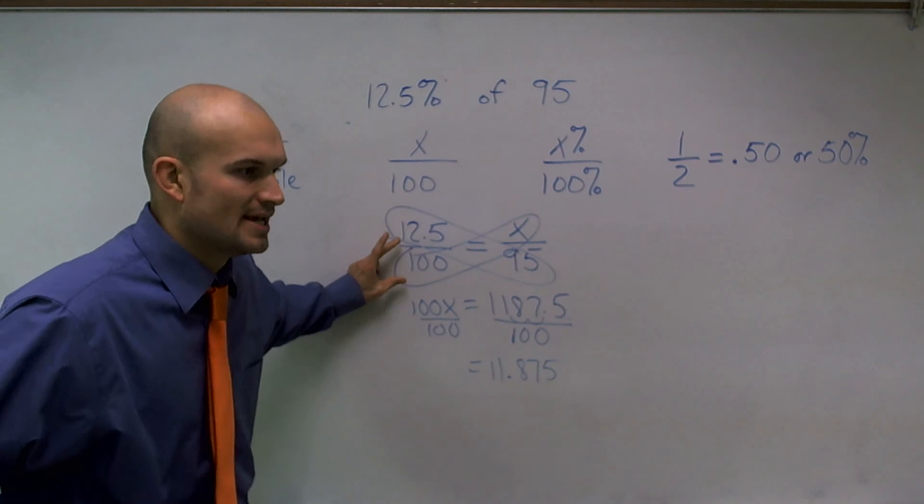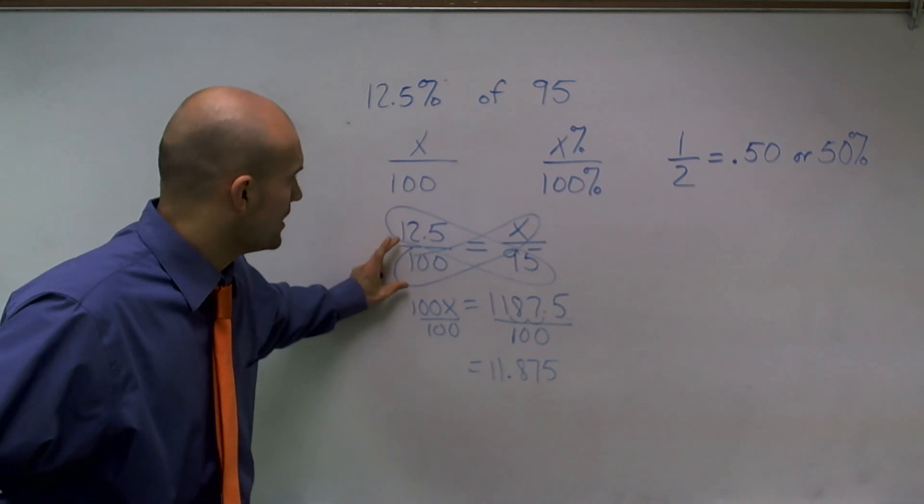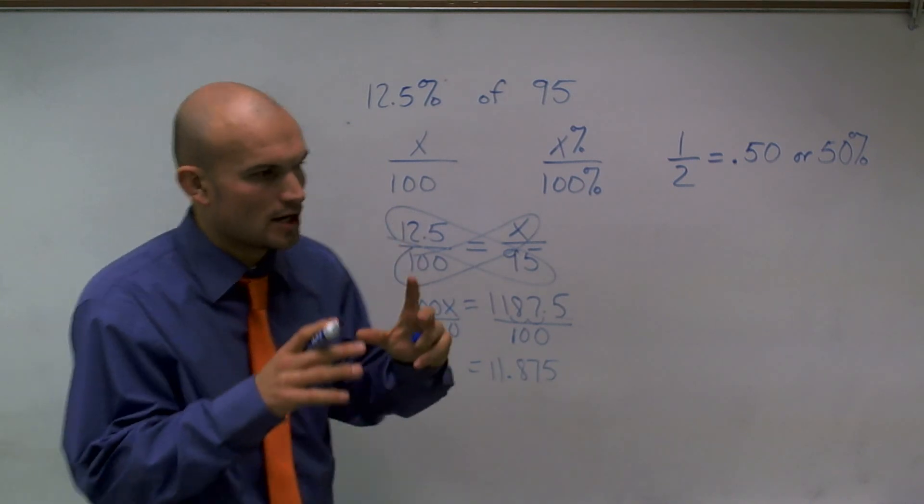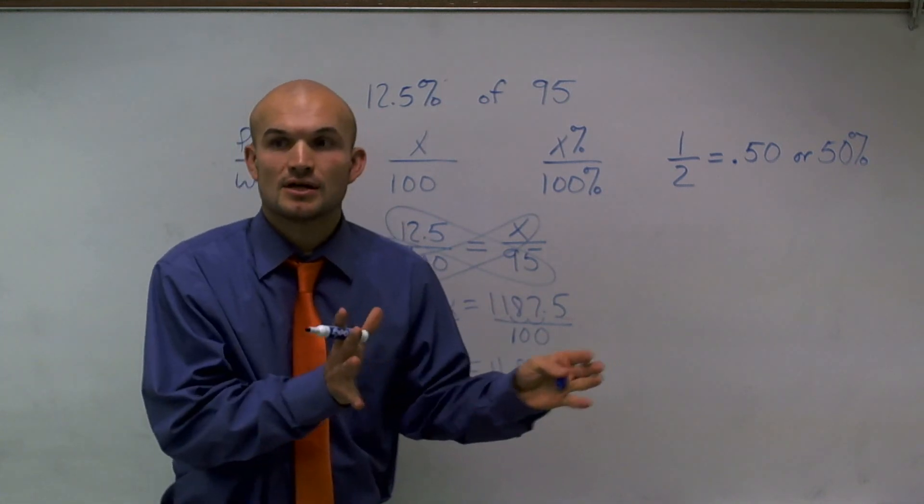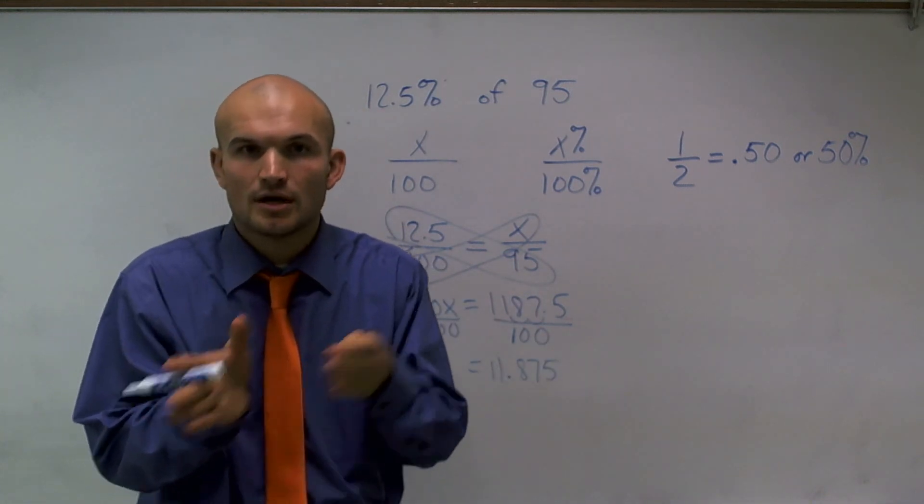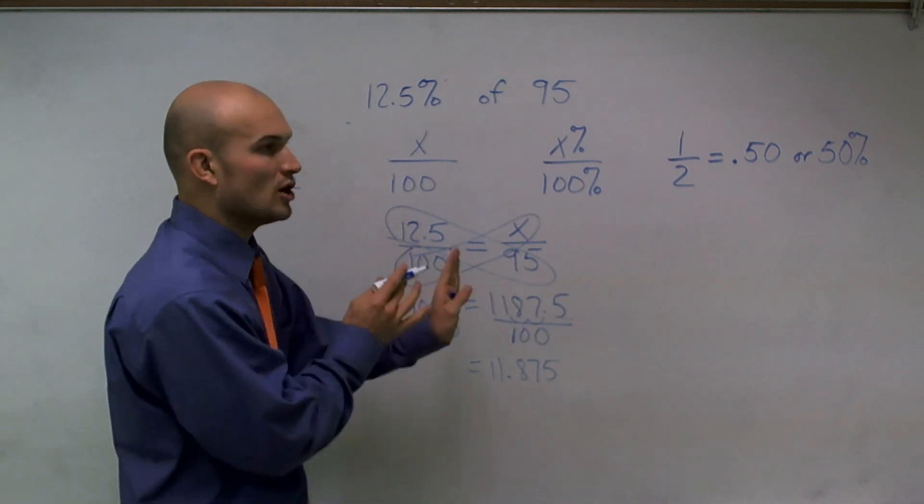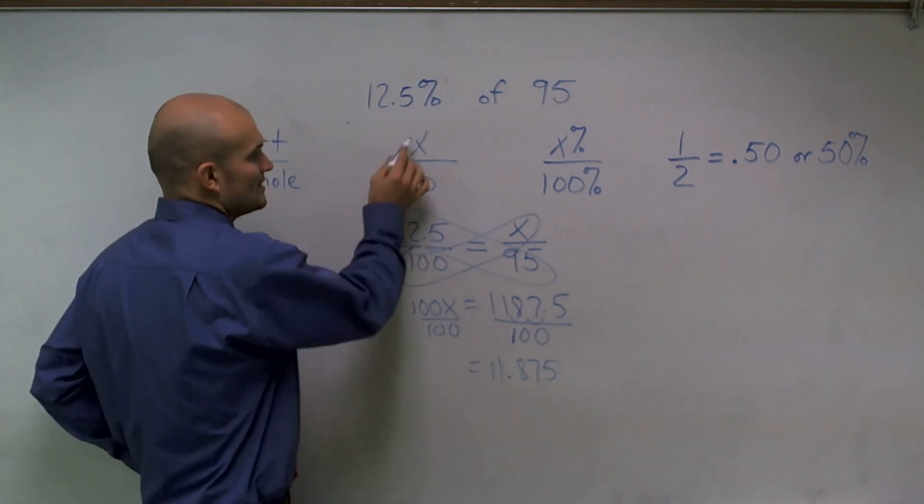Now, when we're multiplying a fraction times a number, we just multiply it across. So what you're doing is you're taking a fraction of another number. So you're just going to multiply. So what I can do is, instead of writing this as a fraction,